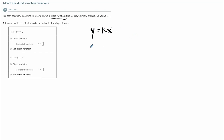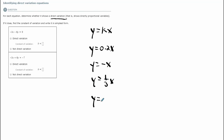Here are some examples of direct variation equations: y equals 0.2x, y equals negative x, y equals one-third x, y equals 4x. These are examples of equations that are direct variations.